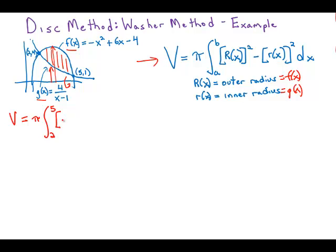of f of x. So this would be negative x squared plus 6x minus 4. That thing squared minus g of x squared dx.